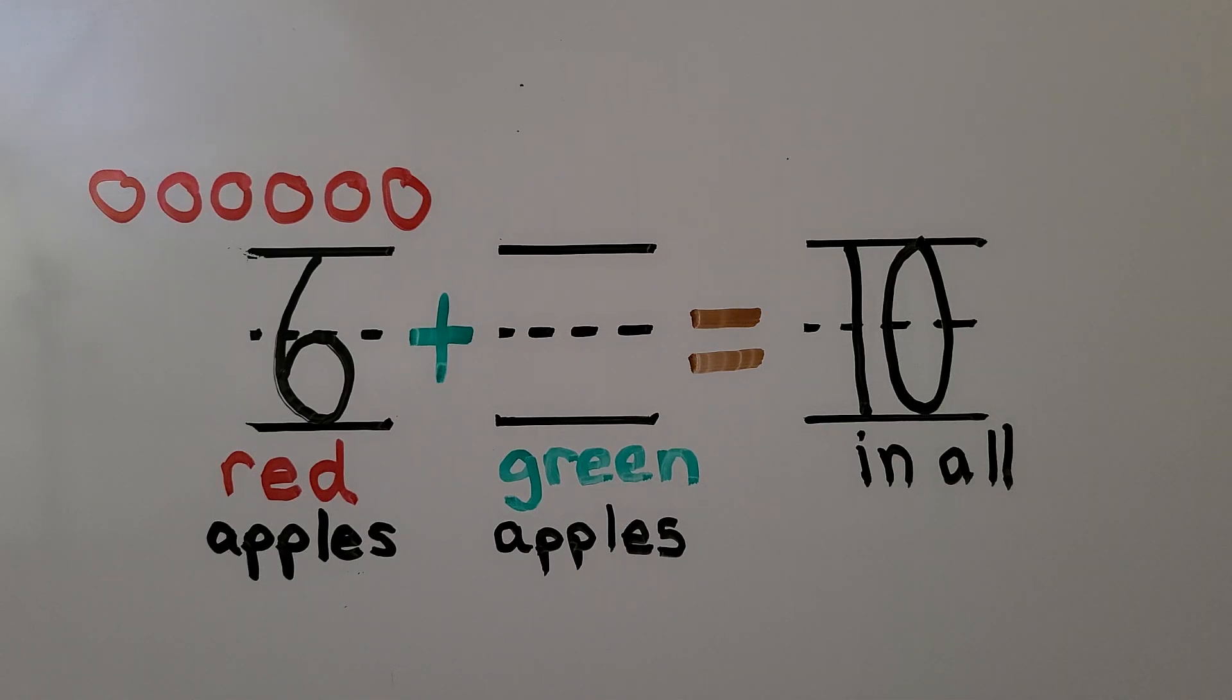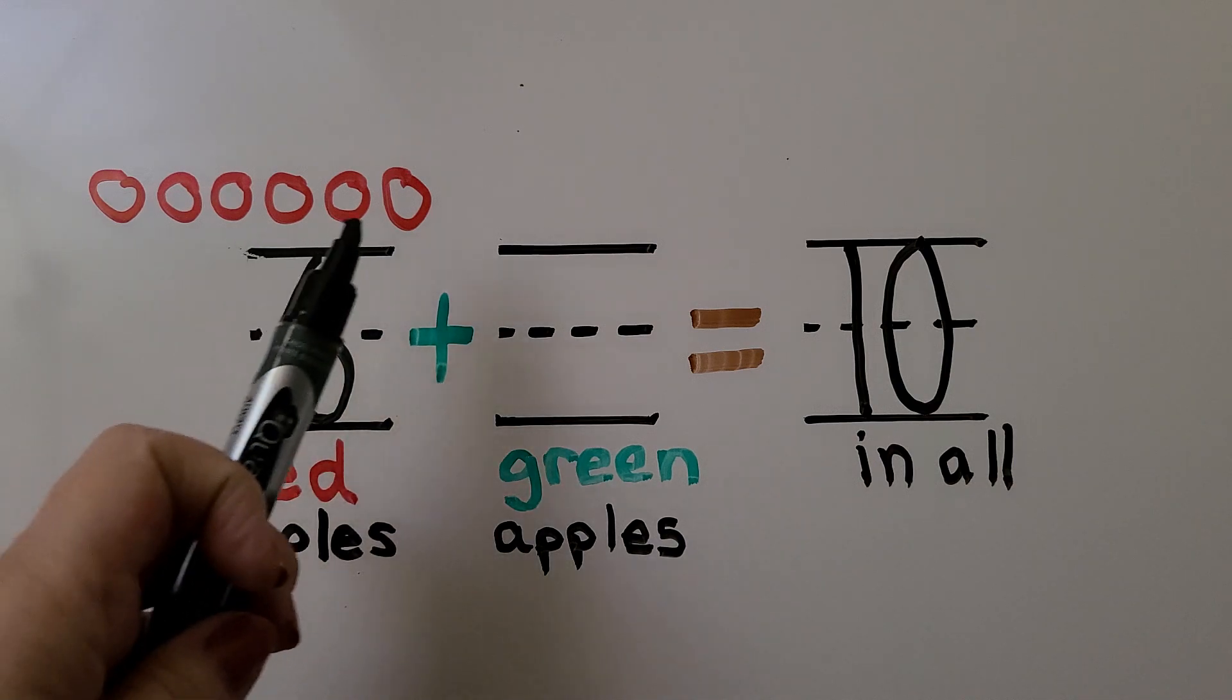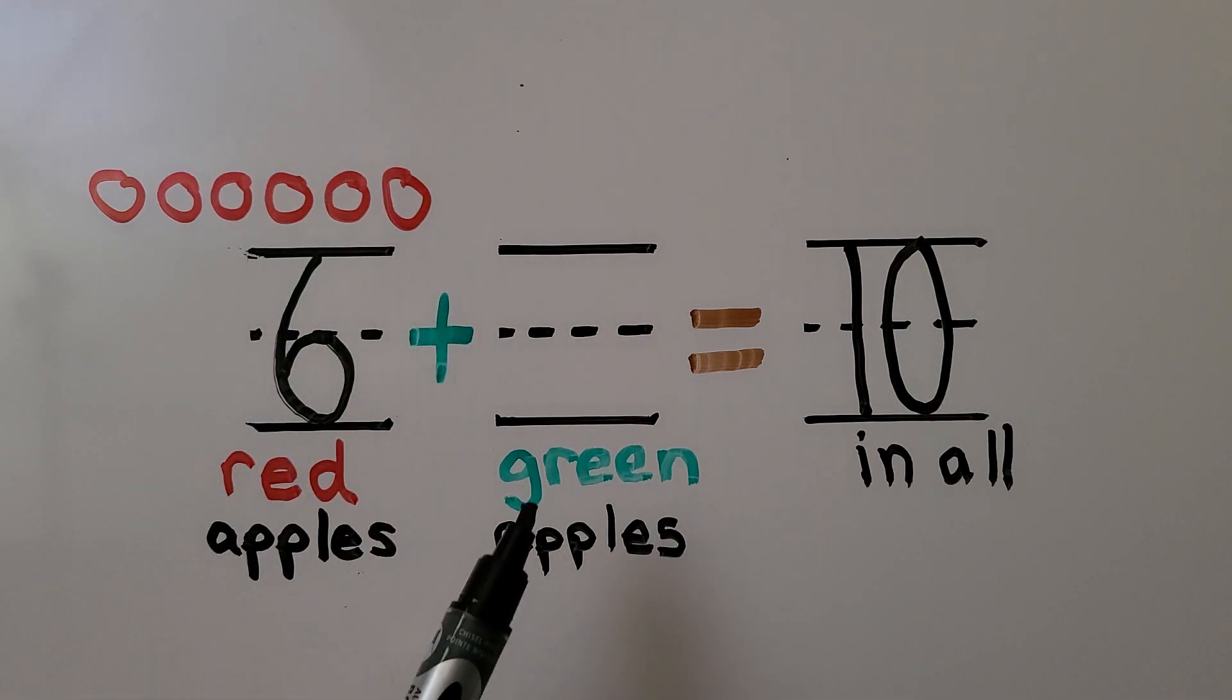Listen very carefully to this problem. There are 10 apples, so we know there's 10 in all. Six are red, the rest are green. How many are green? So we know six red apples plus some missing number of green apples is 10 in all. Six and a missing number is equal to 10. We need to find the missing number.